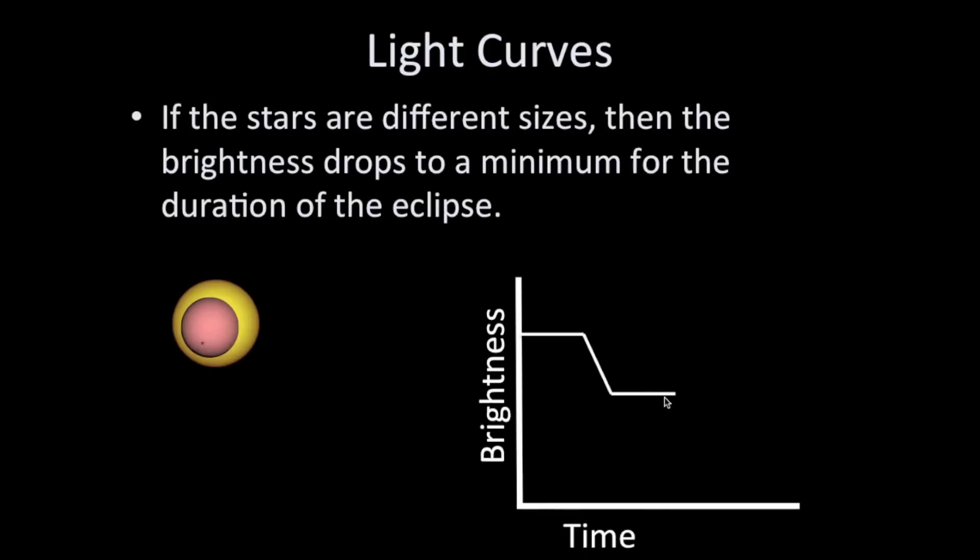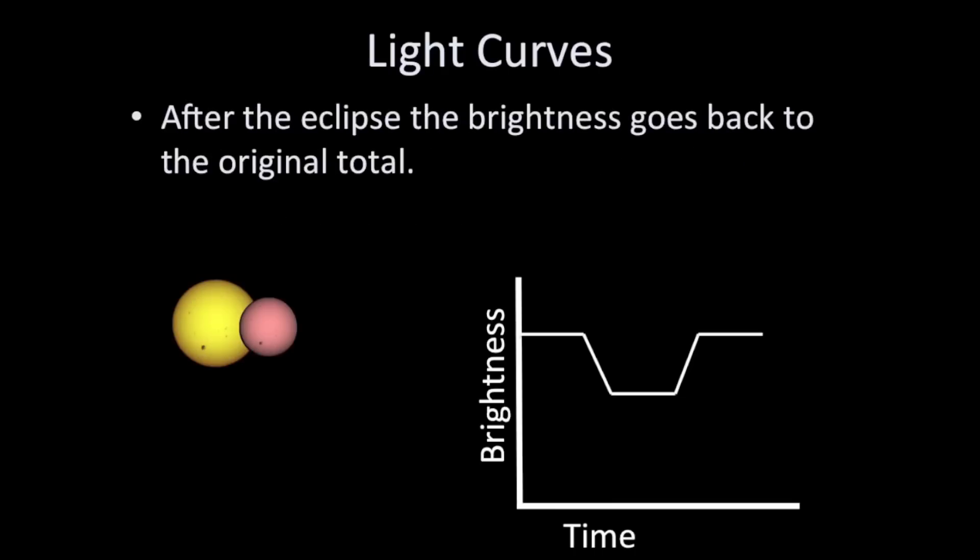And this stays at the minimum amount for the duration of the eclipse until the first star moves beyond the second one. After the eclipse, the total amount of light goes back up. So what we're looking at here is a brightness versus time or light curve that's typical for when one star eclipses another. And that's what the dip looks like.